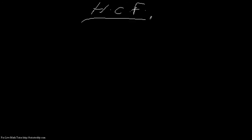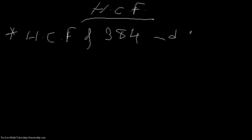Let's discuss another rule of HCF. We know the common rule of seeing the common factors, but there is another rule. If a problem is like that, you have to find the HCF of two numbers — say HCF of 384 and 1296 — we can apply another rule of HCF. We divide the greater number by the less, the divisor by the remainder, then the second divisor by the second remainder and so on until there is no remainder, and the last divisor is the HCF required.